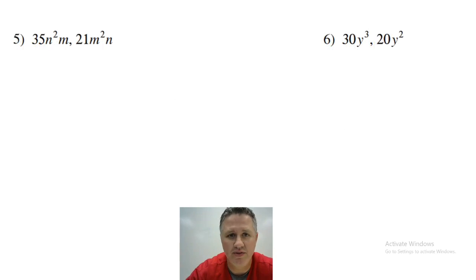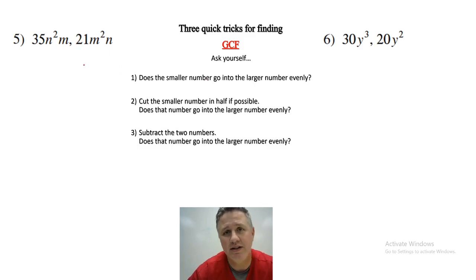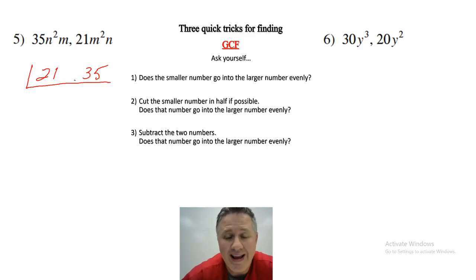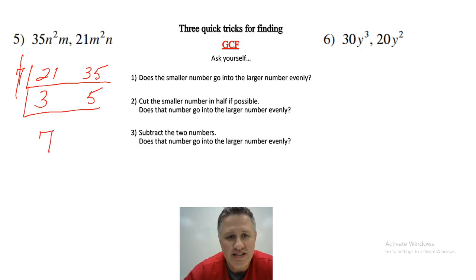Let's look at question number five. We're going to go through the steps again. Does the smaller number go into the larger number evenly? 21 doesn't go into 35. Cut the smaller number in half — I can't cut an odd number in half cleanly. And if I subtract the two numbers, I get 14, and 14 doesn't go into both. So I'm going to do the slide. What number goes into both 21 and 35? It is 7. Seven goes in three and five times respectively, and nothing goes into 3 and 5 besides 1. The GCF is 7.